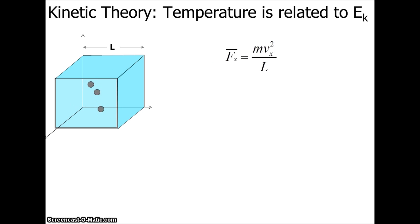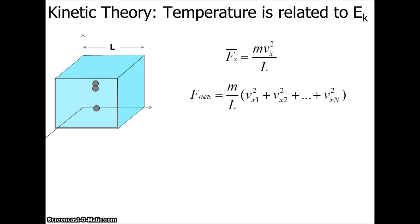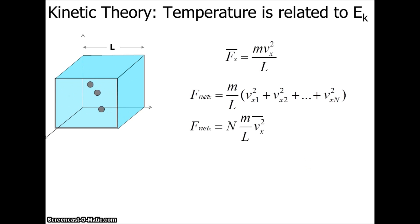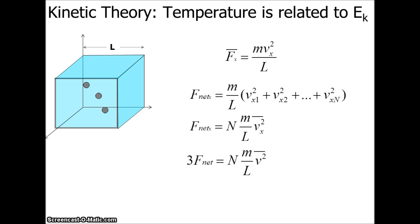We just figured out what the force is as a function of the mass of the particles, the speed of the particles, and the container's dimensions. Keep in mind we've got lots of different particles in there, so we have to multiply by the sum of all those speeds squared and find the average. That's just in the x-direction — there are 3 degrees of freedom, so we multiply by 3 to get the net force.